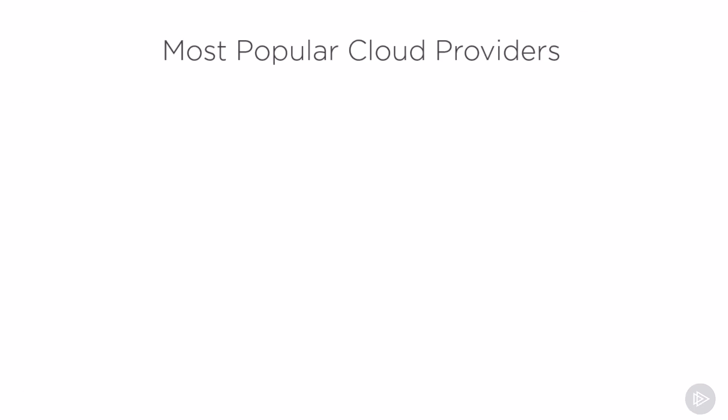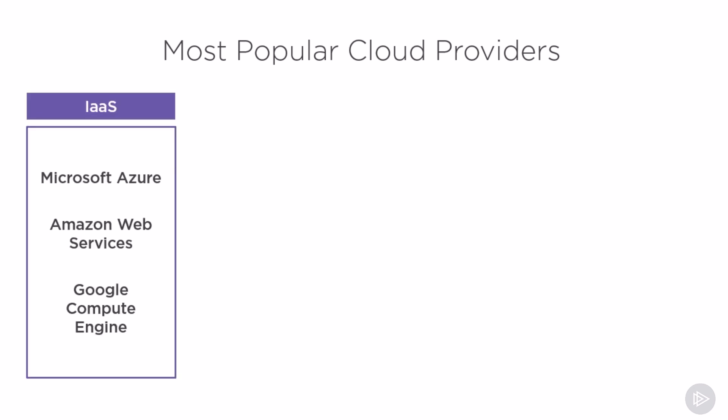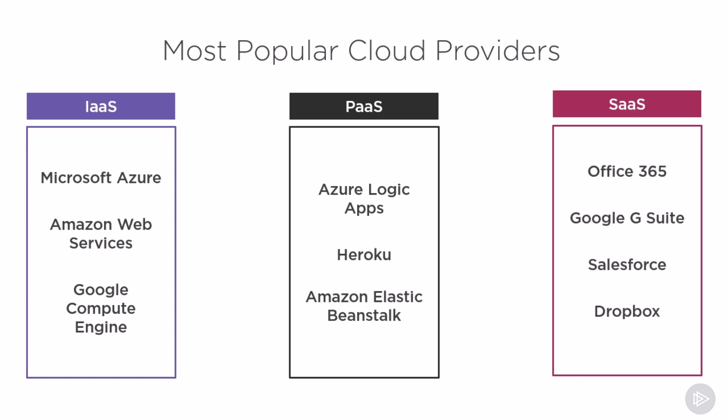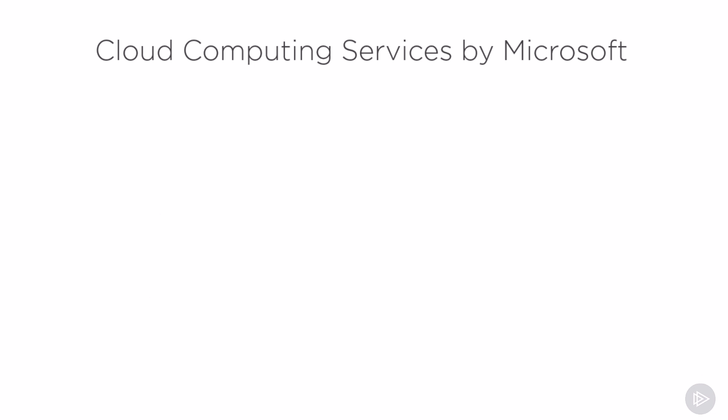Let's take a look at some examples of cloud vendors and services in each category. For Infrastructure as a Service, some of the big players are Microsoft Azure, Amazon Web Services, and Google Compute Engine. In Platform as a Service, some big players are Heroku, Amazon Elastic Beanstalk, and Azure Logic Apps. In Software as a Service, we're looking at Office 365, Google G Suite, Salesforce, and Dropbox. There are hundreds, if not thousands, of cloud providers, with Software as a Service probably being the most popular.